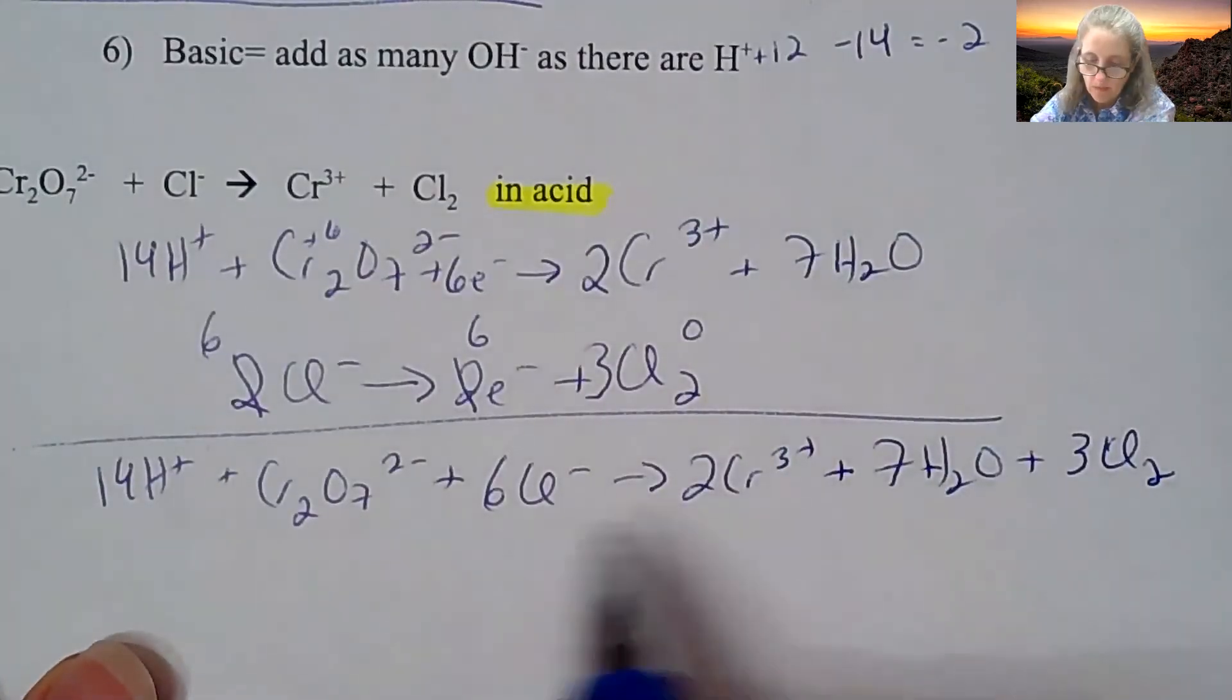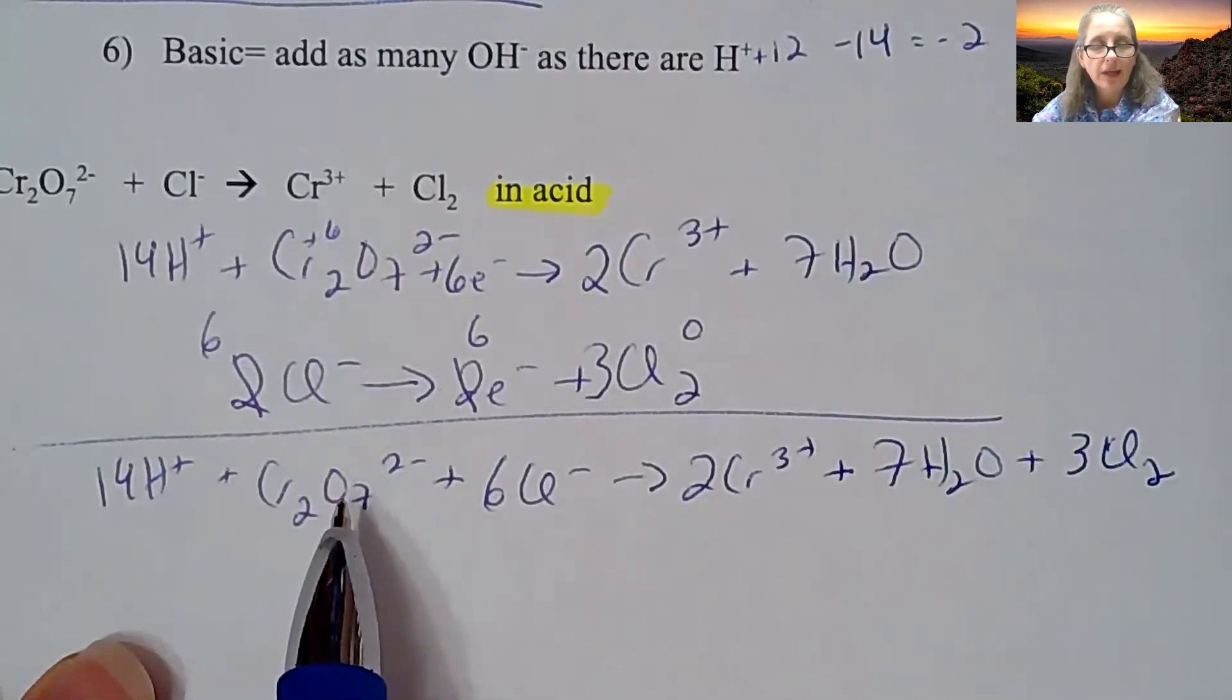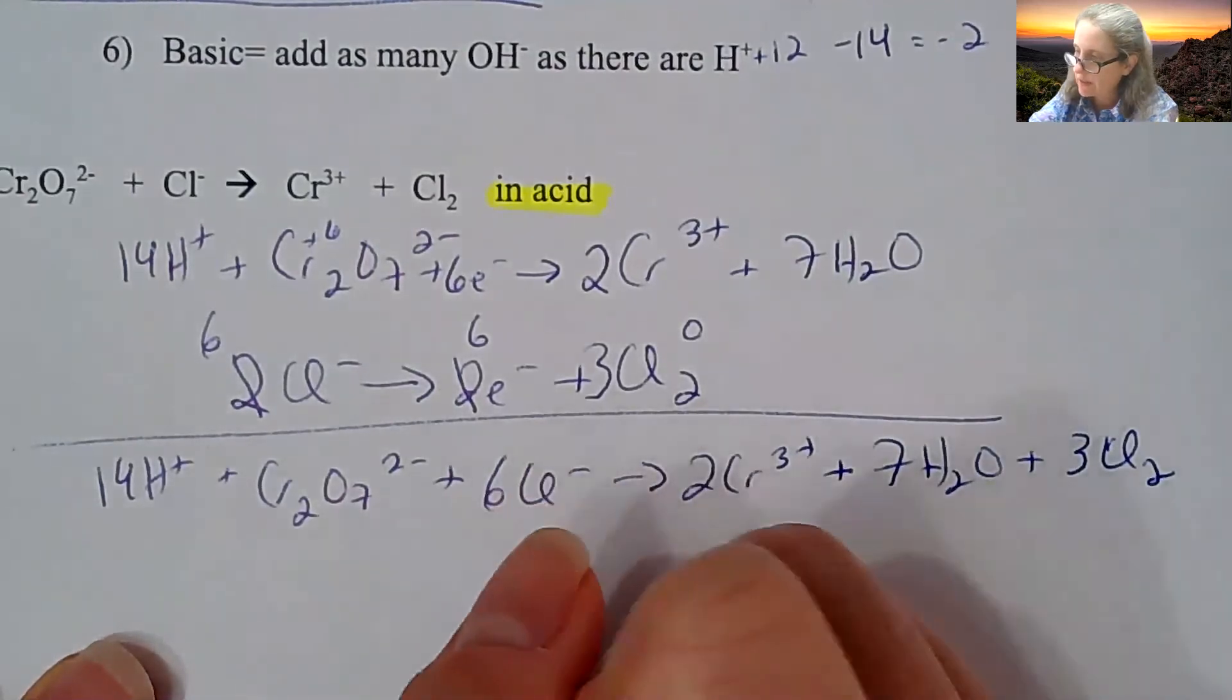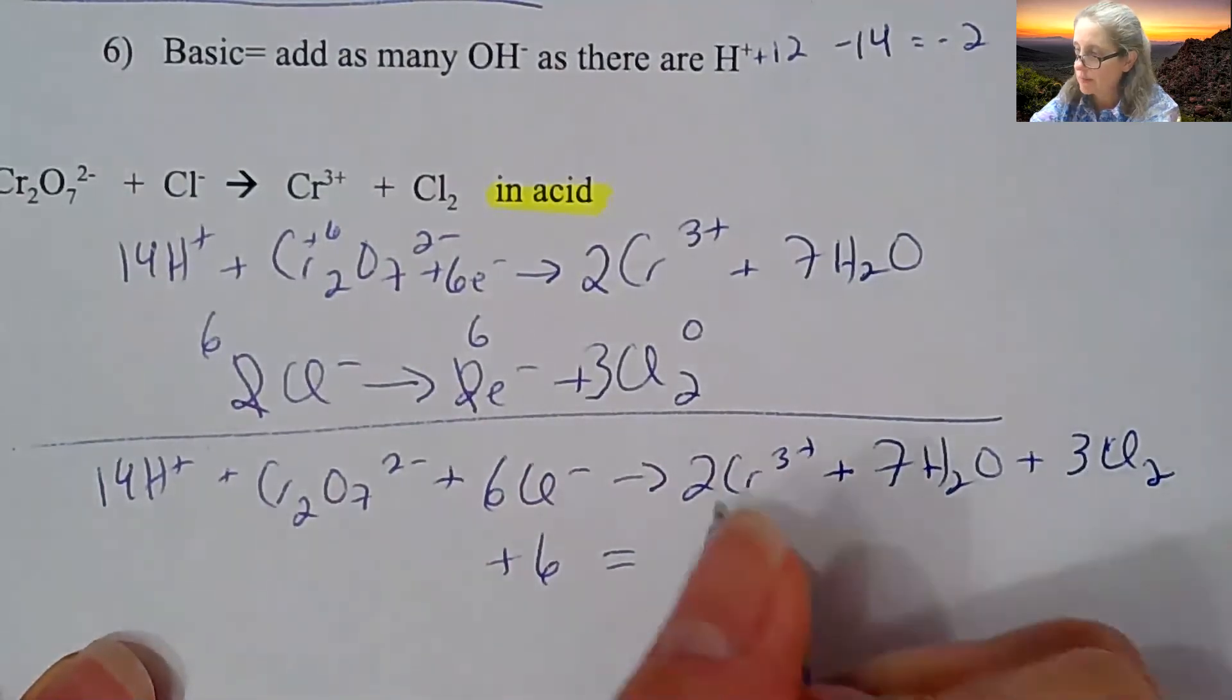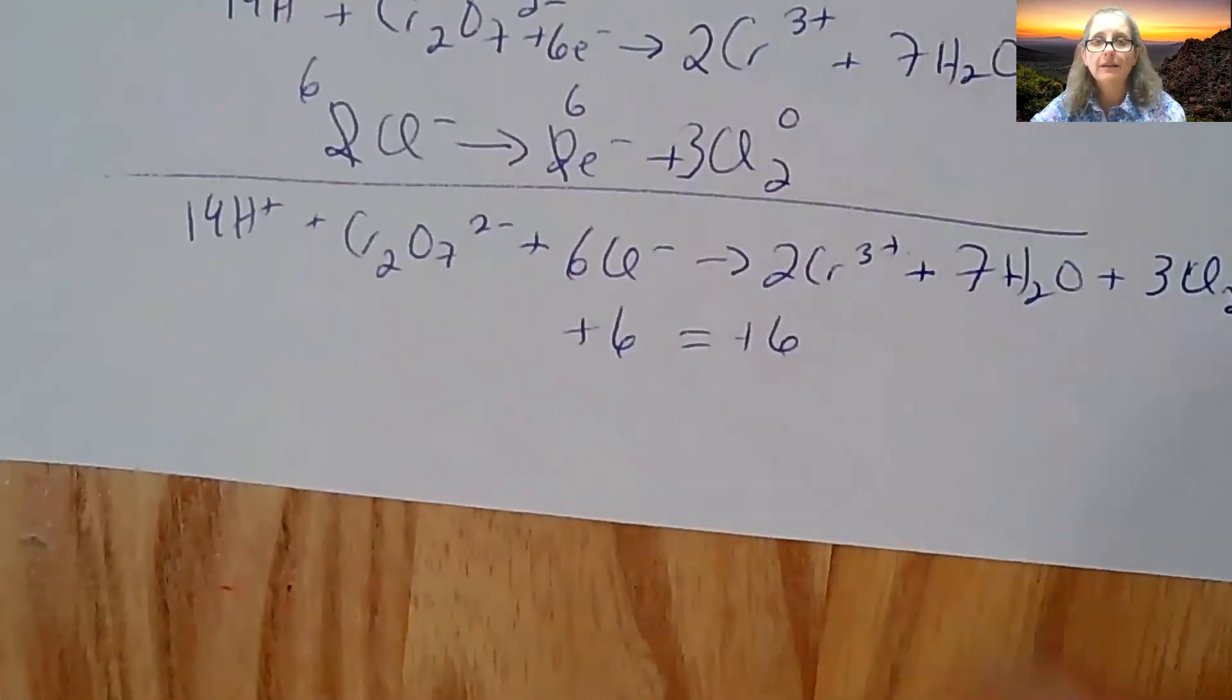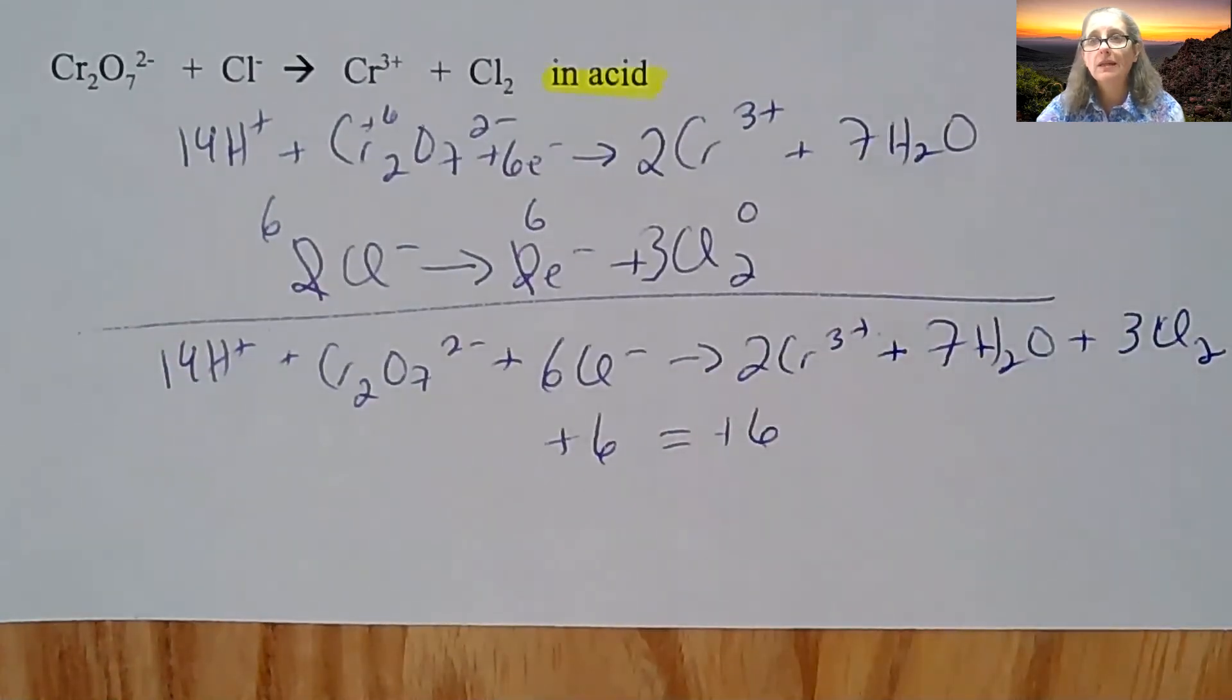Then I check the charges. I got 14 positive and negative two, so that's plus 12, and then I got negative six, so that's plus six on this side. This has no charge, this has no charge, so the only charge is coming from the two times the three, so that's plus six. So that is correct in terms of the balancing.